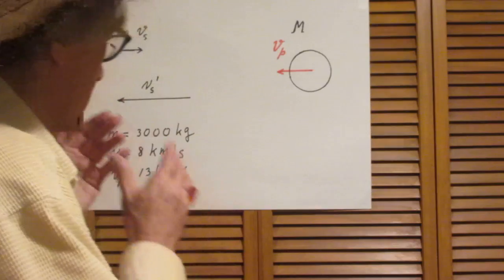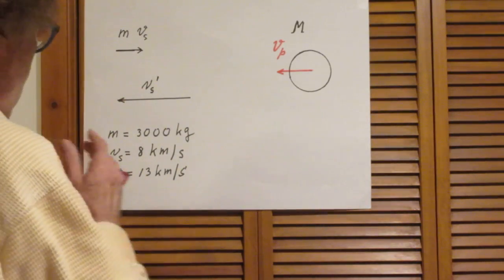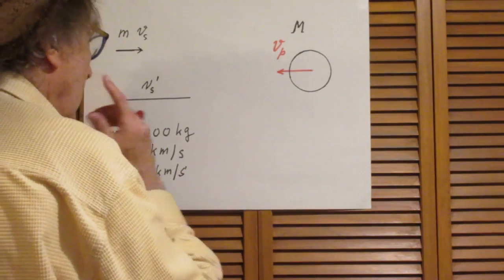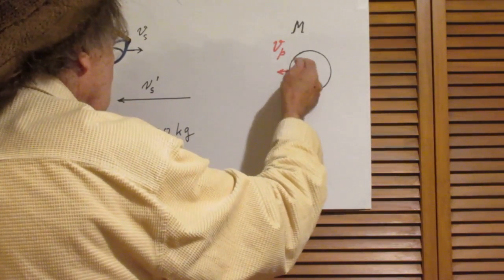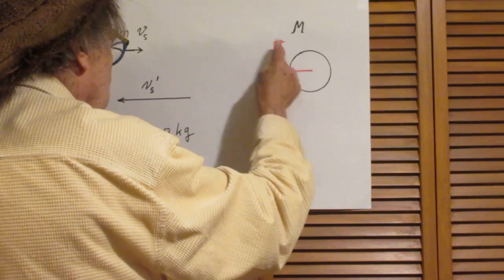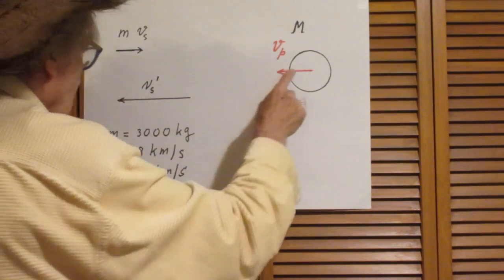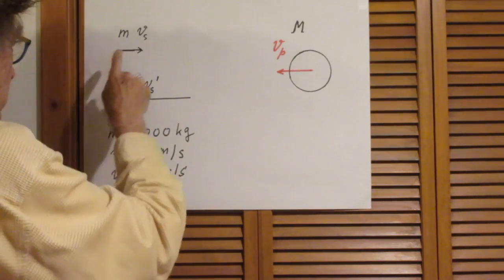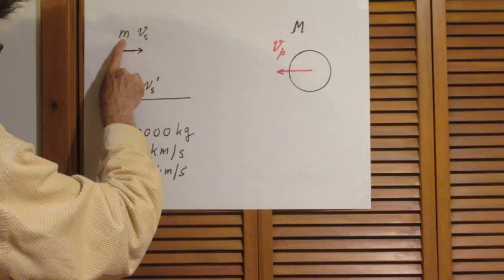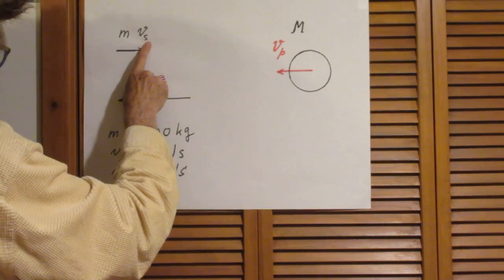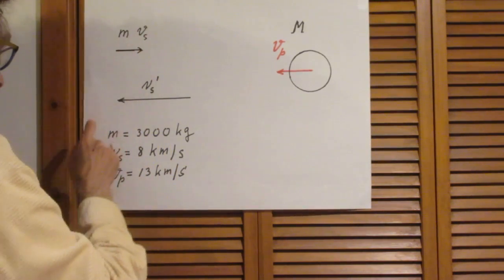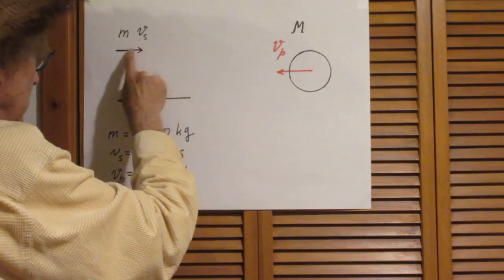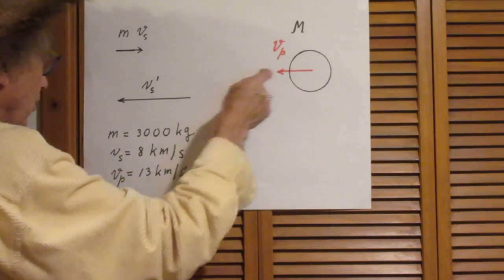So let's first take a look. We have a planet here with mass capital M and it has a speed in this direction V of P. P stands for planet. Very very very far away from this planet is a satellite with mass little m and speed V of S, which stands for satellite.